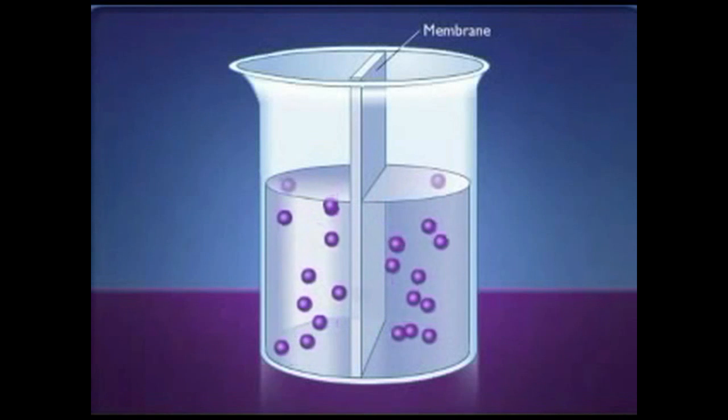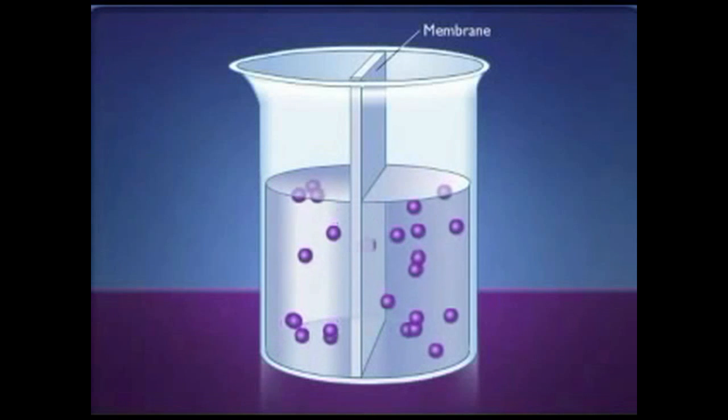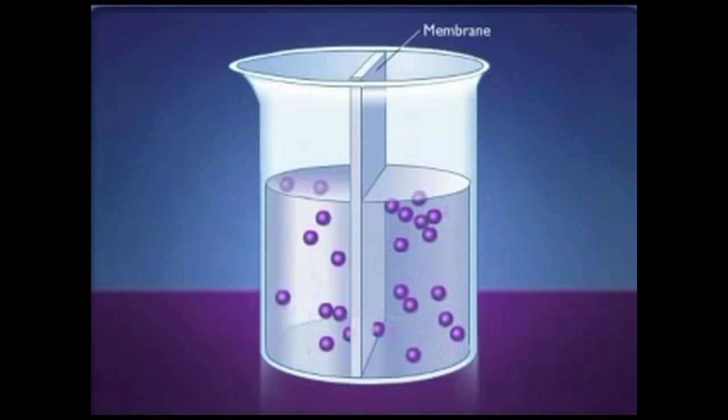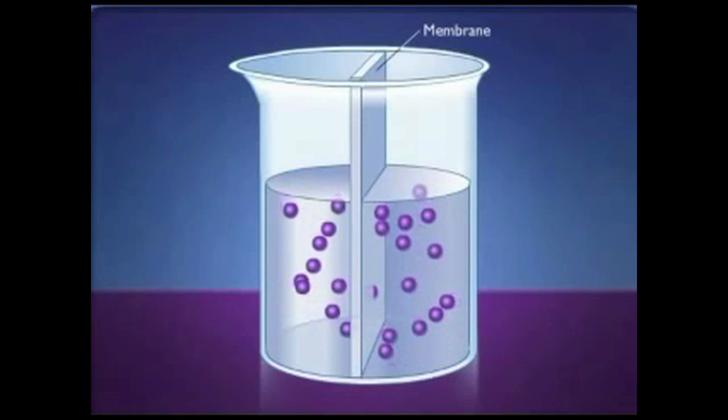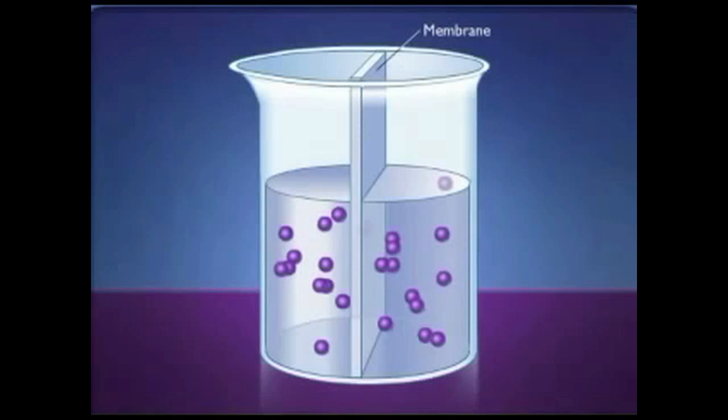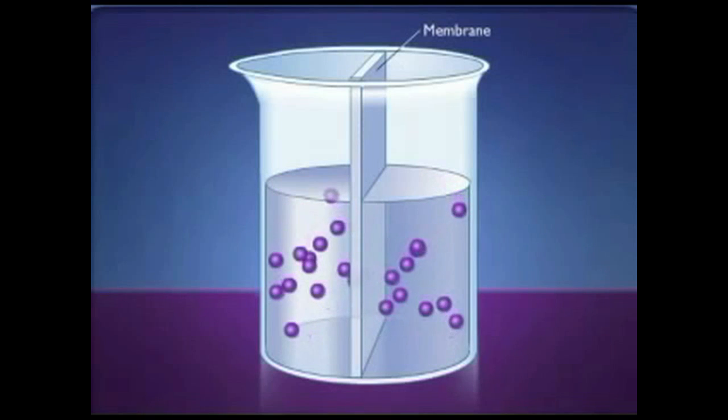Diffusion is the net movement of molecules down a concentration gradient. This process allows small molecules, such as oxygen and carbon dioxide, to cross the plasma membrane.